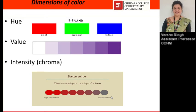Now, dimensions of color. There are three dimensions of color: hue, value, and intensity.